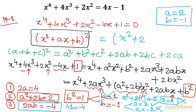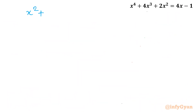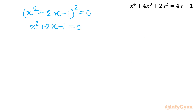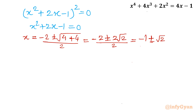So with a equals 2 and b equals minus 1, the equation becomes (x² + 2x − 1)² equals 0. Applying the quadratic formula gives x equals minus 1 plus or minus square root of 2, with multiplicity 2.